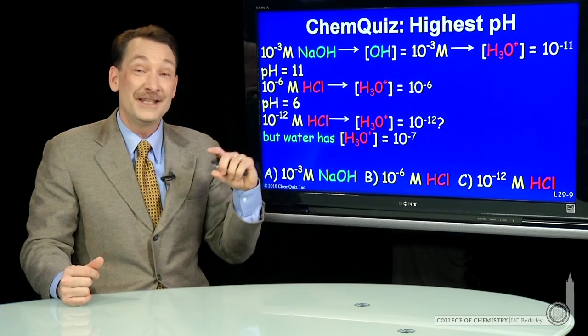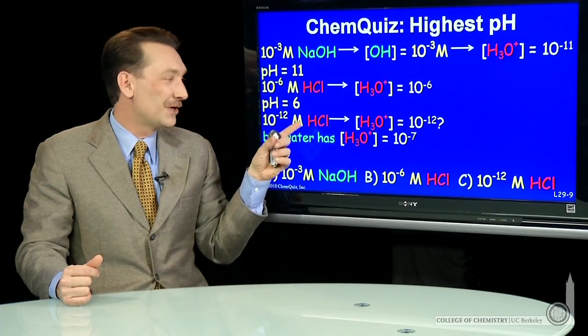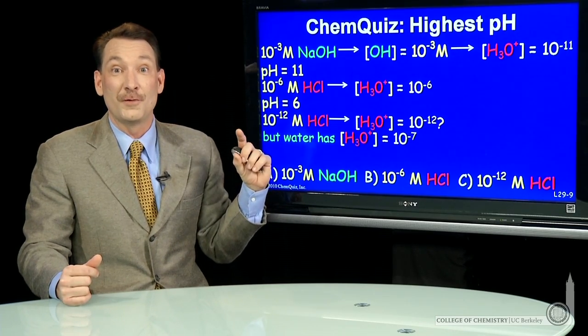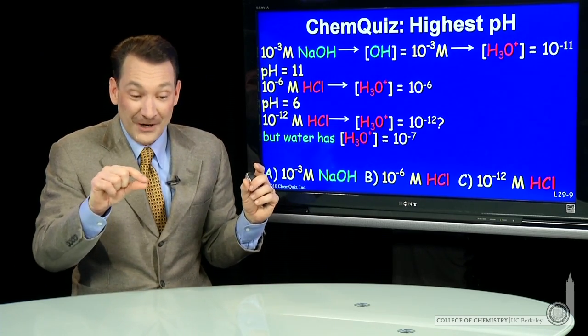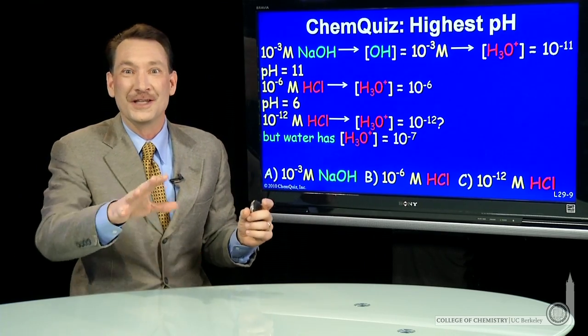So indeed, the pH of this solution isn't 12. It's 7. It's adding an incredibly small amount. In fact, to get to the minus 10 to the minus 12 molar, it would be just a fraction of a microgram of HCl that you would blow into a liter of water.